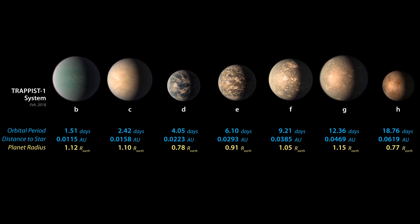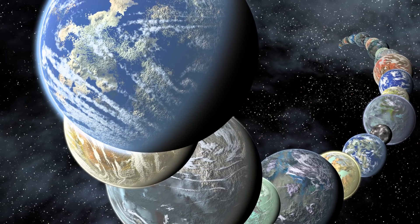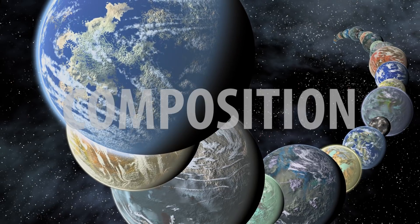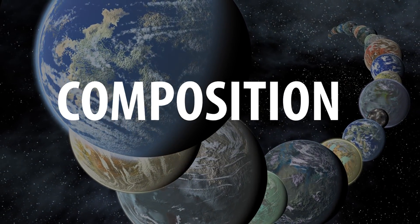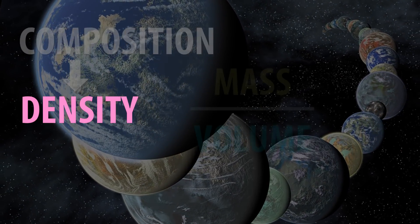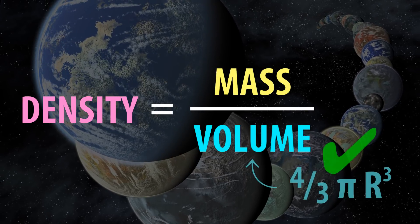This kind of observation has been done for thousands of exoplanets. But to understand what the planets are made of, we need to know their densities, which means we have to measure their masses very accurately.